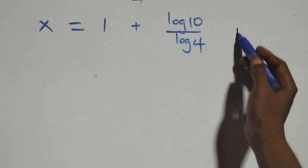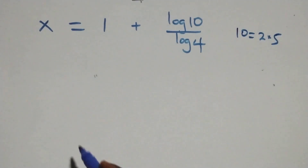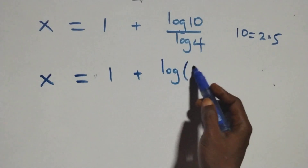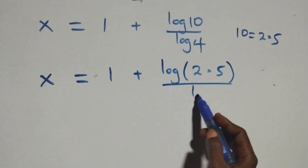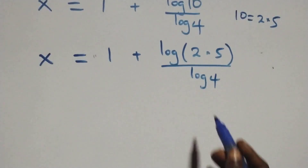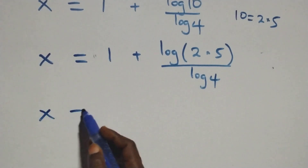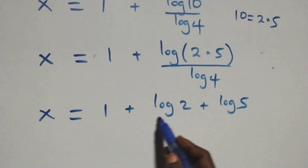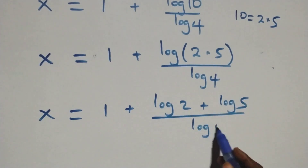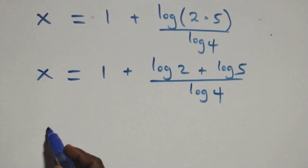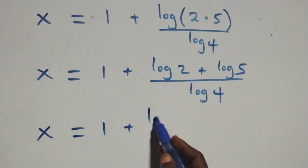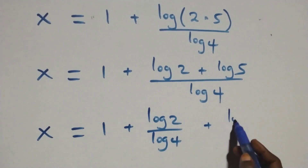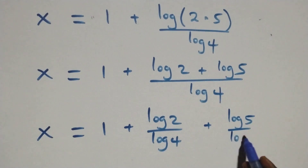Next step: 10 can be expressed as 2 times 5. So what we have becomes x equals to 1 plus log(2 times 5) over log 4. This also follows the log product rule, so we can write it as x equals to 1 plus (log 2 plus log 5) over log 4.